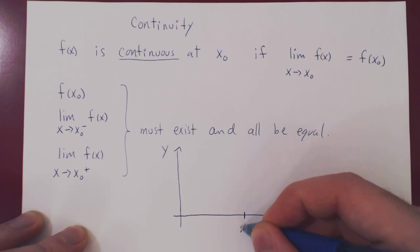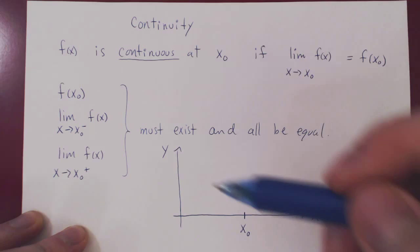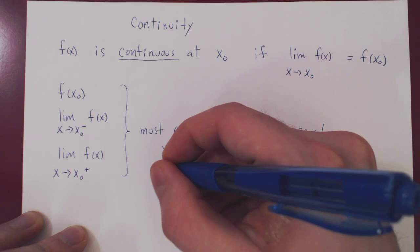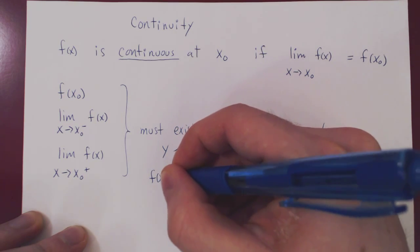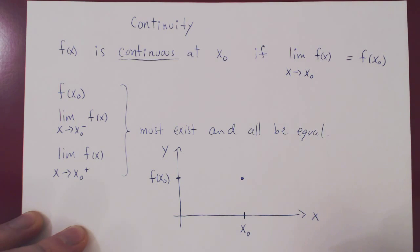Suppose here's x0. First thing, f of x0 must be a real number. Again, for argument's sake, suppose that f of x0 is positive. So the function is defined at x0.